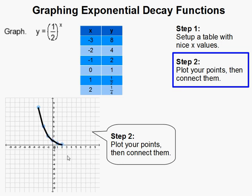Then you connect the lines. And you'll notice that exponential decay functions have this arc going down really fast, and then it goes towards the x axis as it goes to the right.